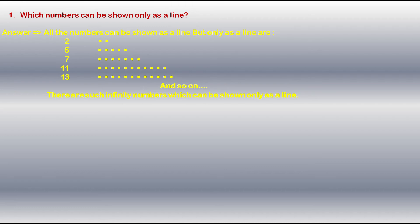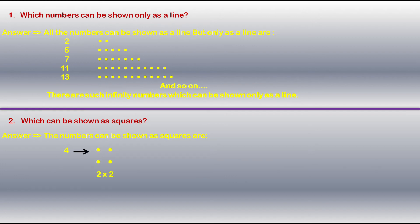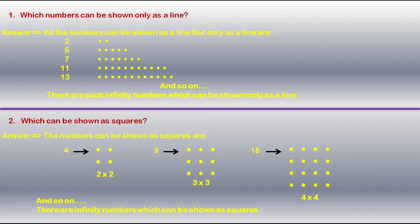Now let's check the second question: Which numbers can be shown as squares? The answer is the numbers that can be shown as squares are 4 (as 2×2), 9 (as 3×3), 16 (as 4×4), and so on. There are infinitely many numbers which can be shown as squares.